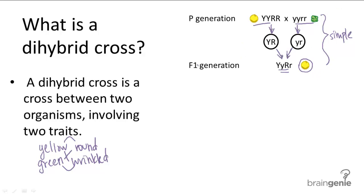So it looks something like this: big Y, little y, big R, little r crossed with big Y, little y, big R, little r.